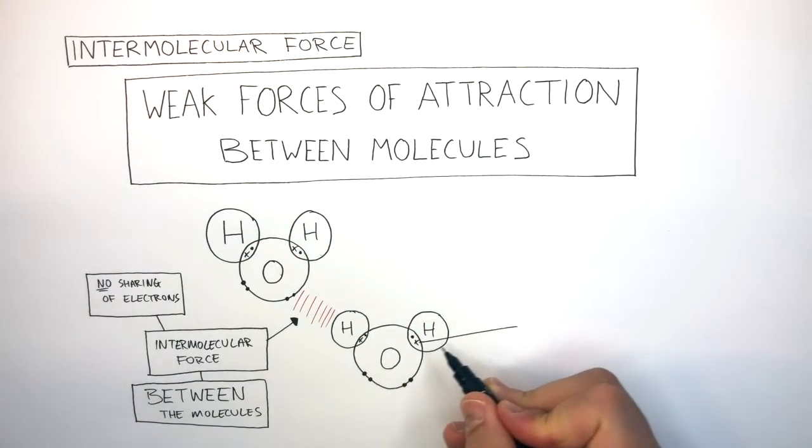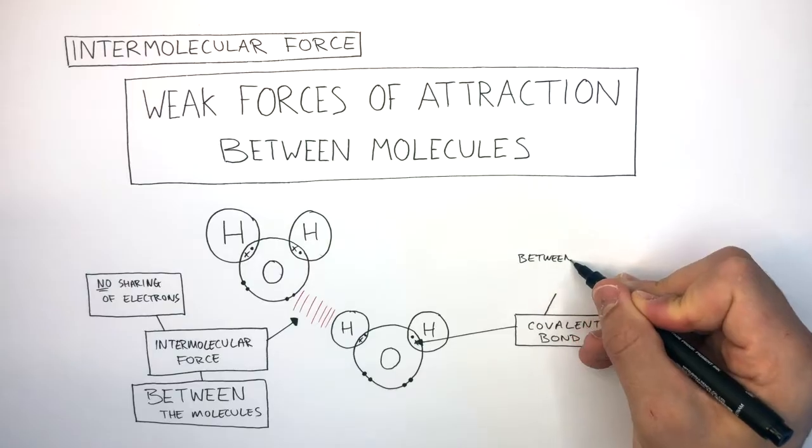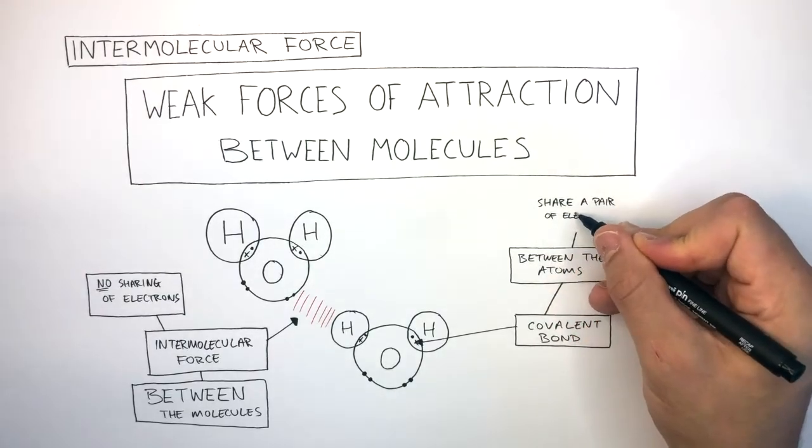Whereas, where these two outer shells overlap, this is a covalent bond. A covalent bond is between the atoms and they share a pair of electrons.